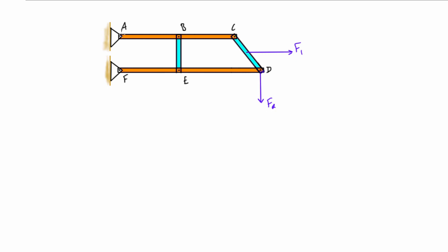If we looked at member ABC, there'll be some force from the reaction here acting on the member. There'll be some force from this member BE, whether it's pushing or pulling if this member is in tension or compression, and then there'll be some force here acting at point C on this member ABC from this member CD. So this member has three forces acting on it.